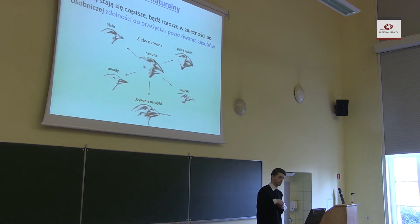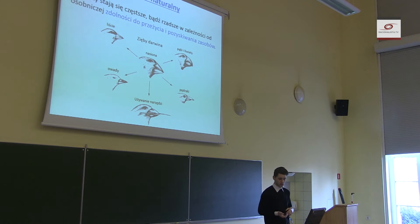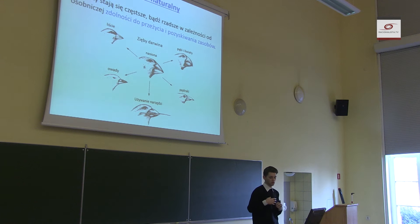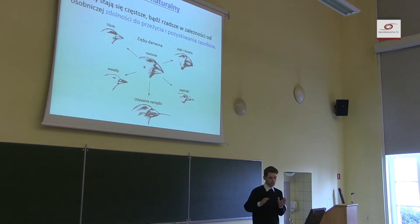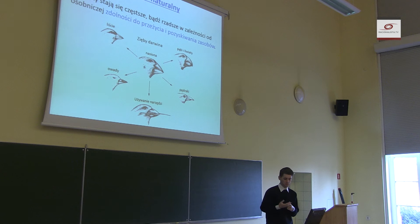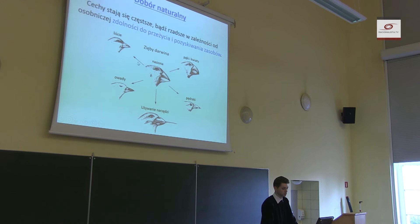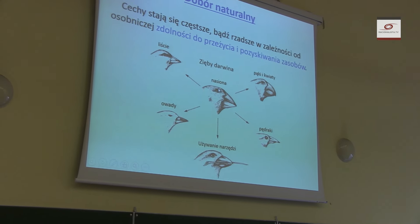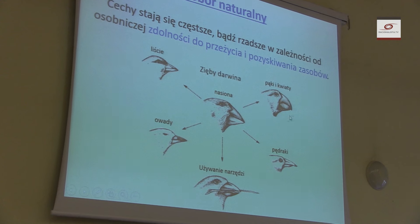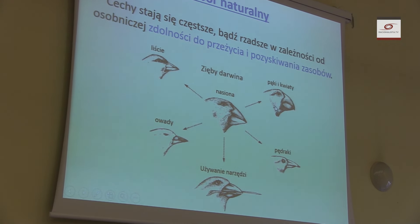I tym jest właśnie dobór naturalny, który sprawia, że cechy stają się częstsze bądź rzadsze w zależności od osobniczej zdolności do przeżycia i pozyskiwania zasobów. Nawet cecha pozornie pozytywna, jak ochrona przed drapieżnikami, niekoniecznie prowadzi do pozostawienia genów w dalszych pokoleniach. Przykładem jest znane Państwu zięby Darwina – specjalizacja pokarmowa, która zaczęła się od gatunku jedzącego nasiona, doprowadziła poprzez zmianę dzioba do specjalizacji ku jedzeniu pędraków, używaniu narzędzi, jedzeniu owadów, liści czy kwiatów.